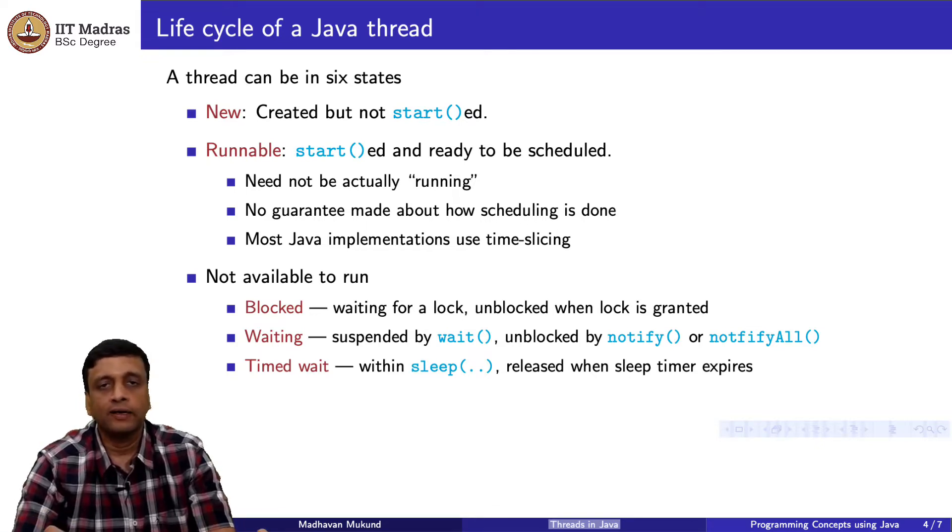But of course, there are situations when a thread may not be able to run. One situation is it is trying to execute something which is synchronized. It needs a lock, but that lock is already taken by another thread. Then it gets blocked. And it must wait for that thread to release it. And then, the scheduler will decide whether to wake up this thread or something else that is blocked. Remember that in this blocked state, the thread itself is not doing any checking. It is not a busy wait. It is just sleeping.